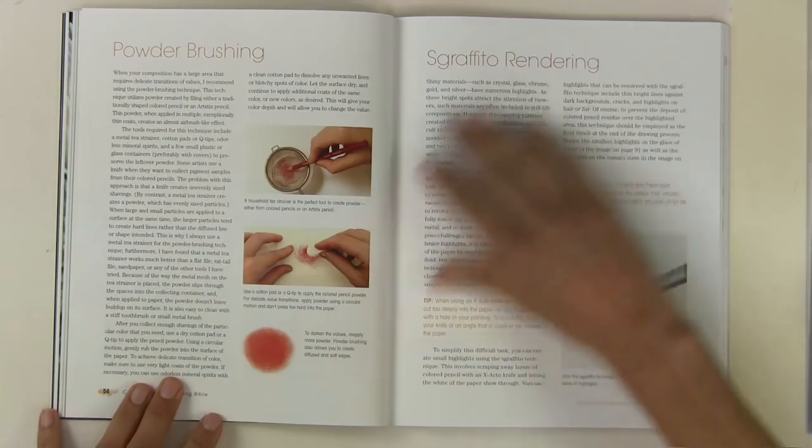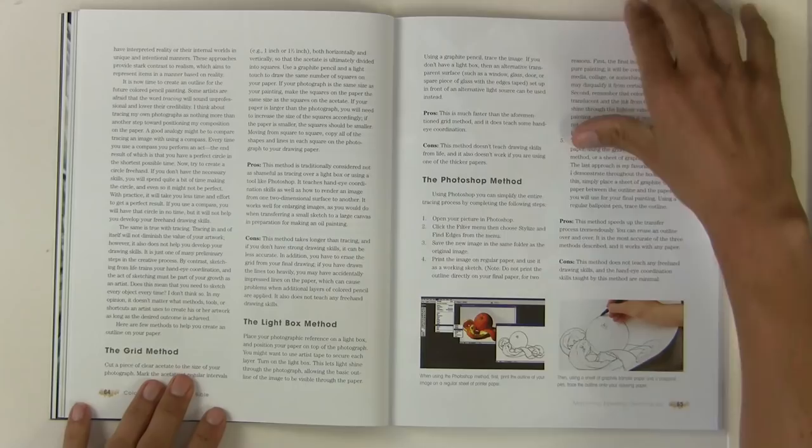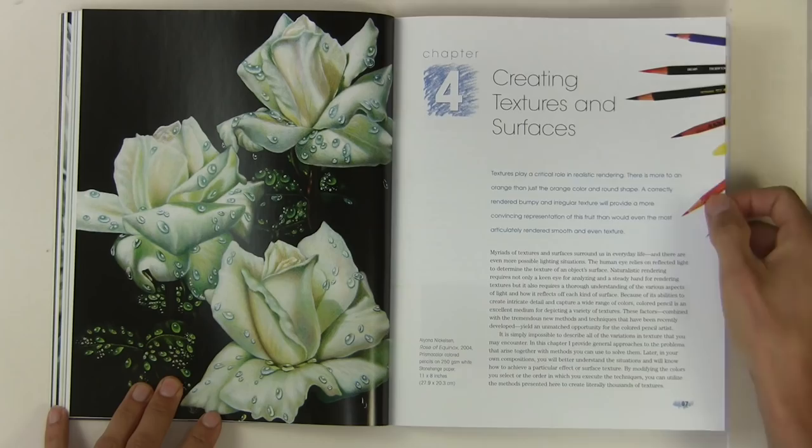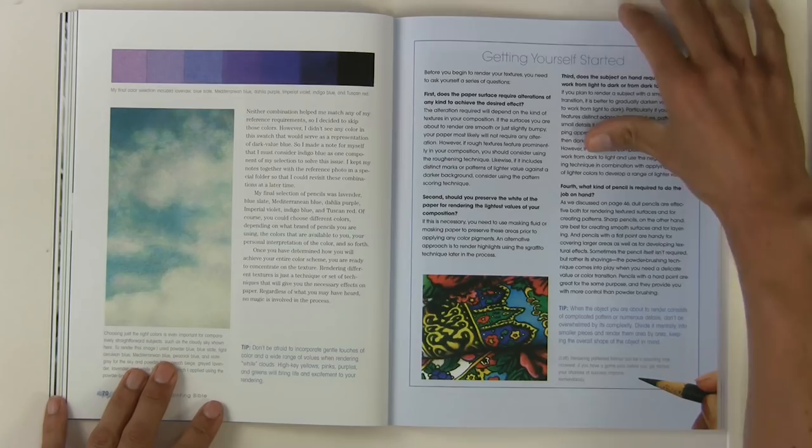Working with white and burnishing, which is a more traditional technique. Creating highlights, scoring patterns. So sometimes, you know, with colored pencils, a white won't go over a dark, so there's different ways of getting around that. Powder brushing—it's quite a large book as well, so I'm gonna have to go through fairly fast. Creating textures and surfaces, choosing colors.